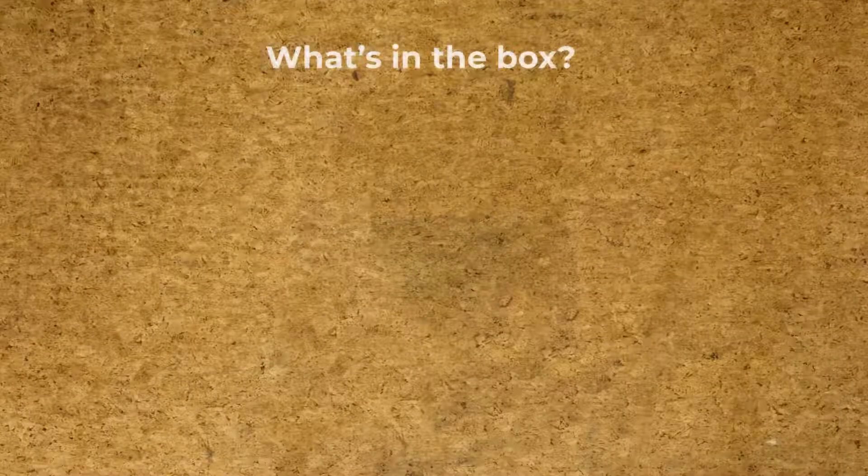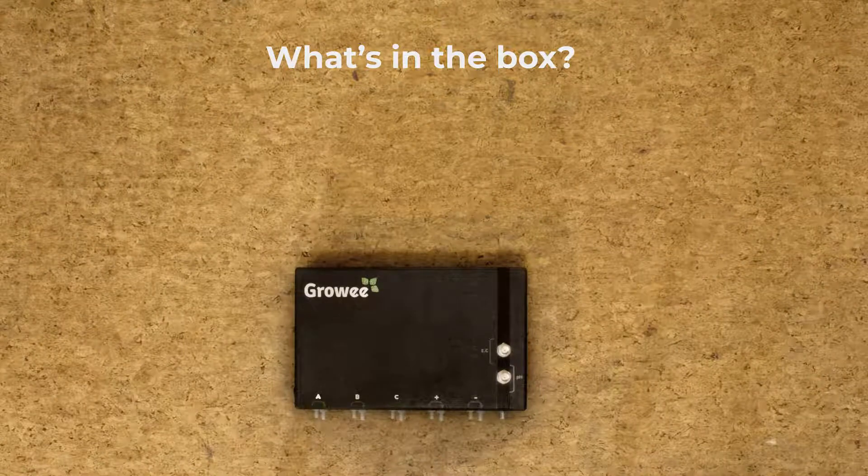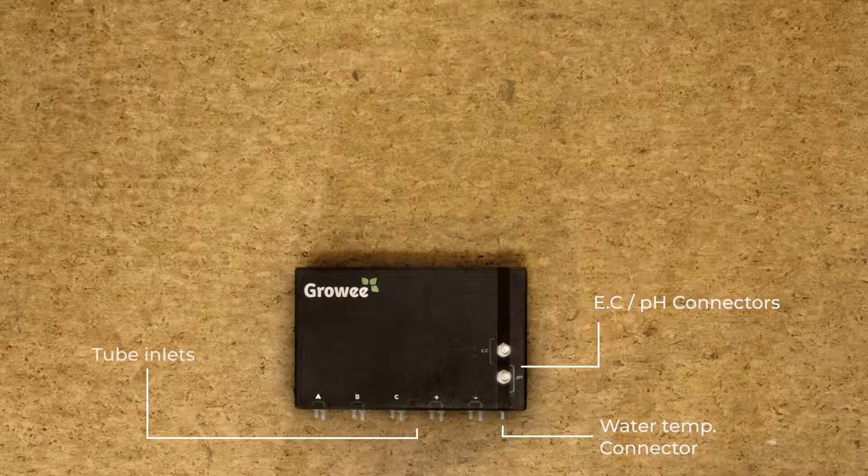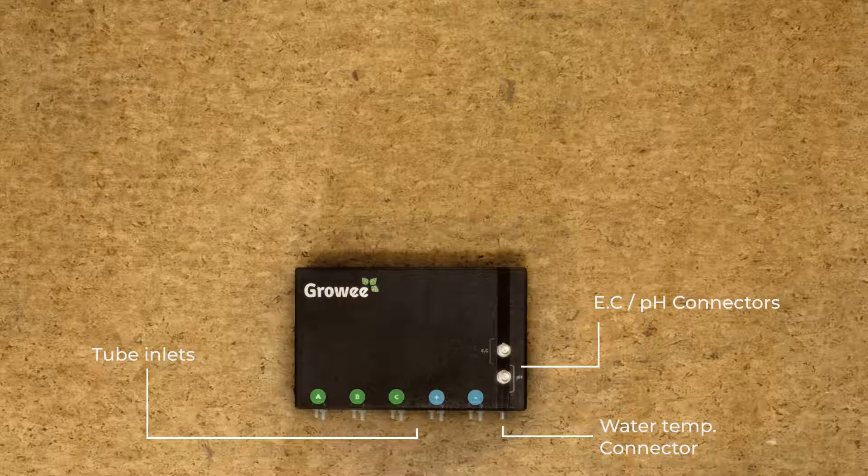Everything you need to get started is in the box. Let's take a quick look. First, there's the GROWE device. It has connectors for EC and PH sensors, as well as for water temperature. Ten tube inlets to connect three of your favorite nutrients, and two for up and down PH solutions.